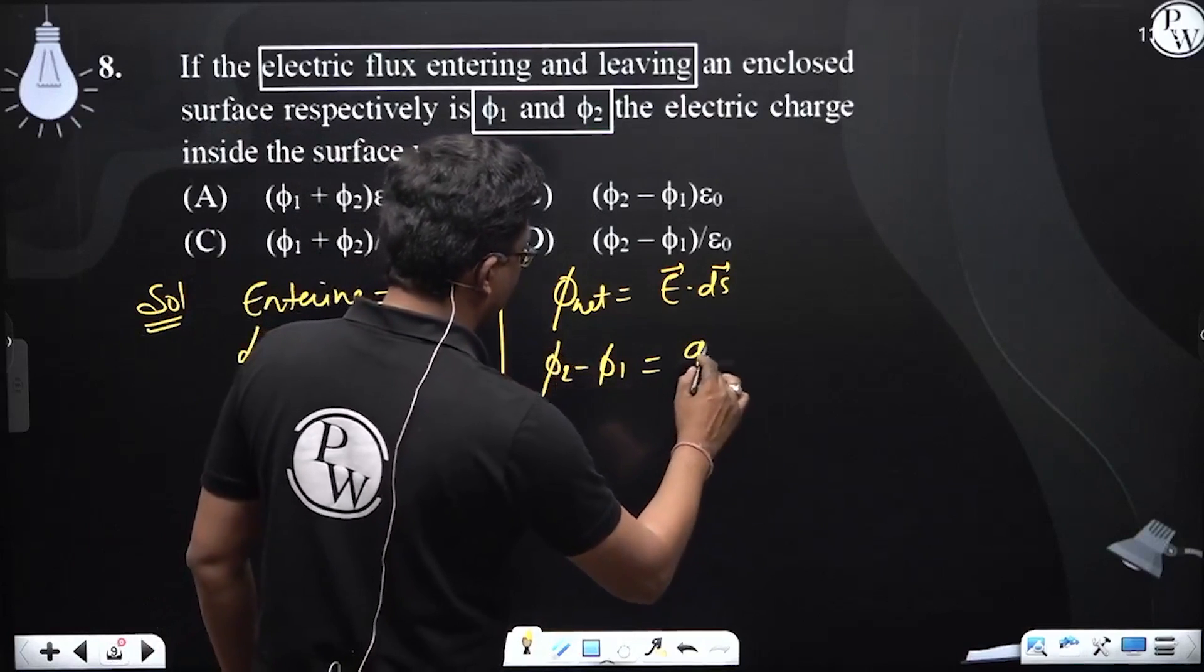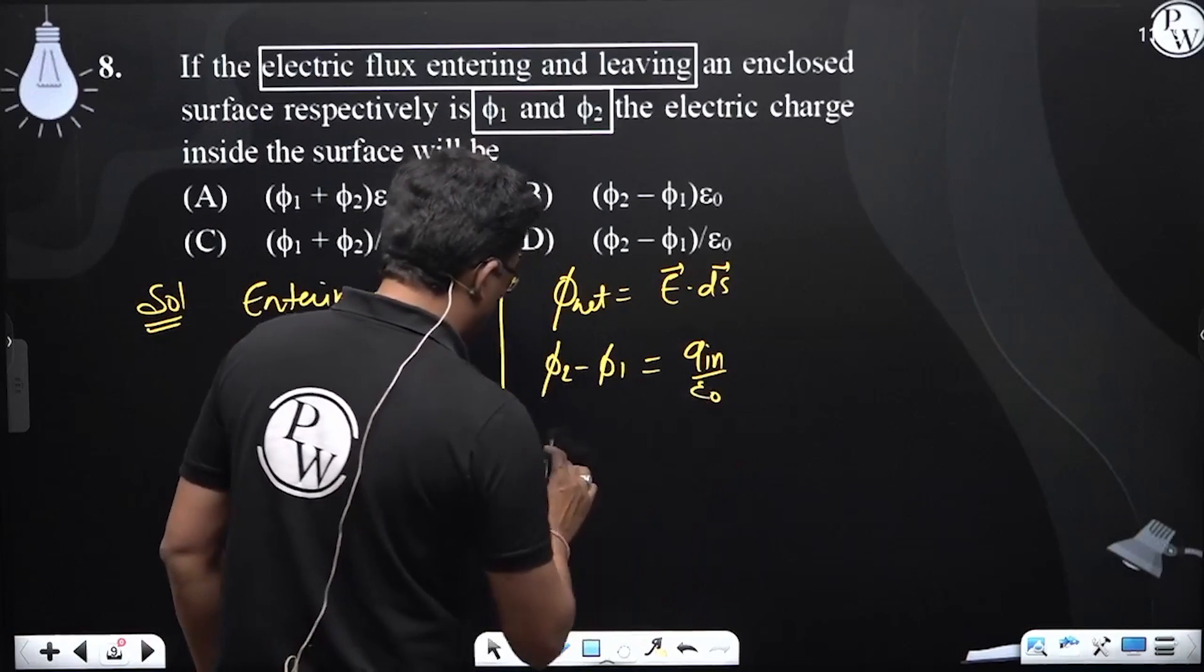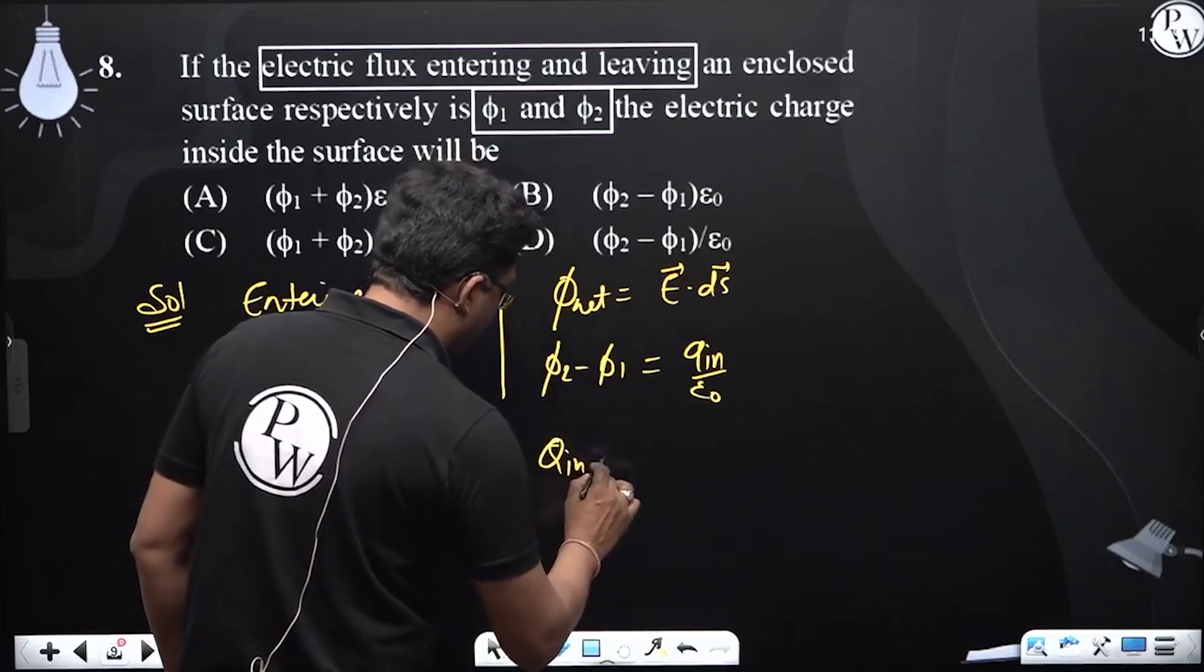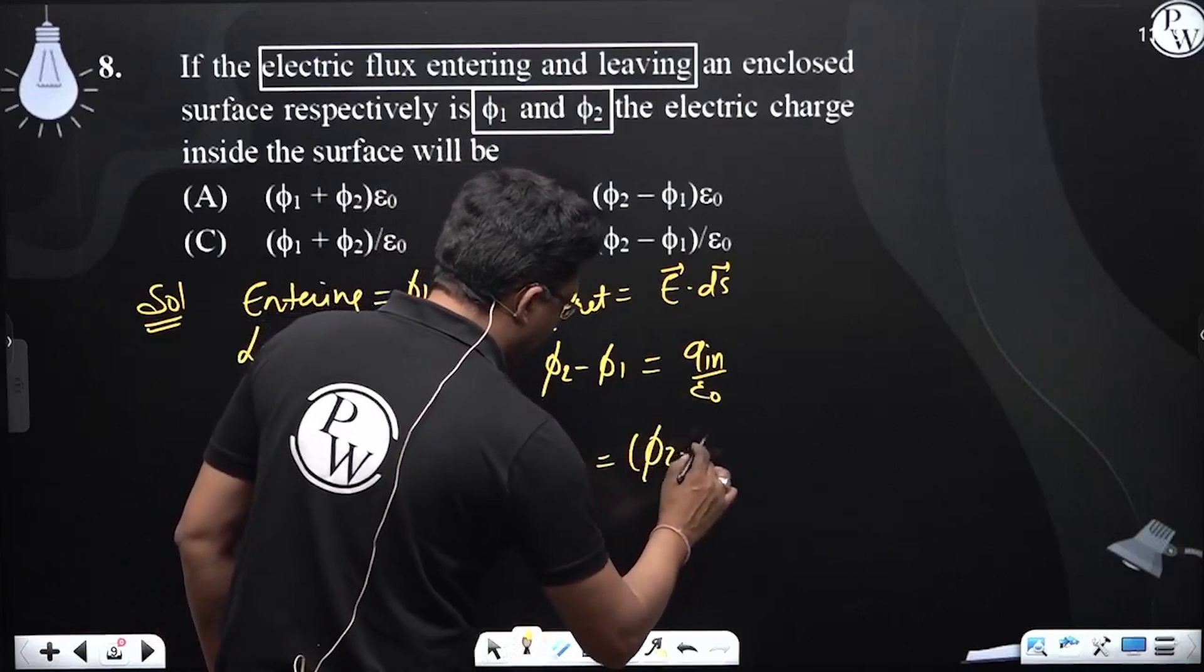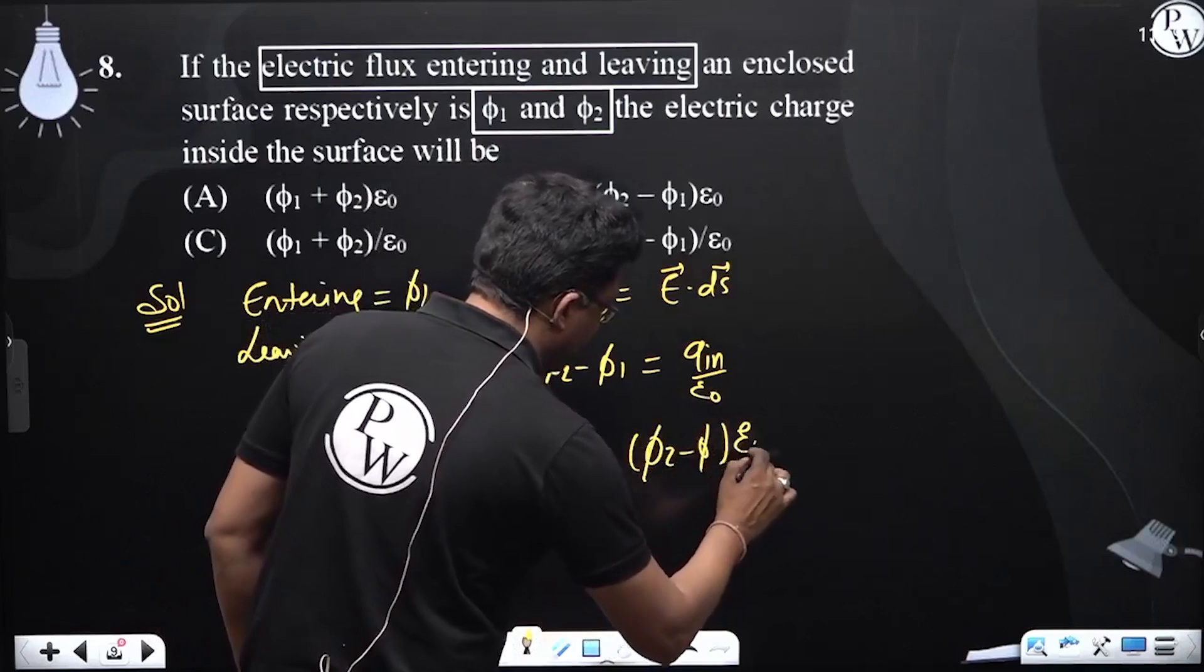So, q_in by epsilon_0. Charge enclosed will be nothing but (5.2 - 5.1) × epsilon_0.